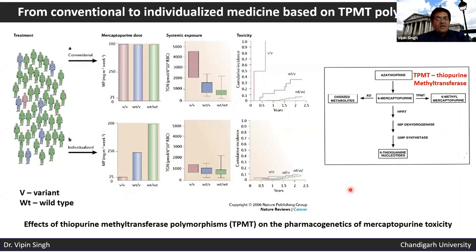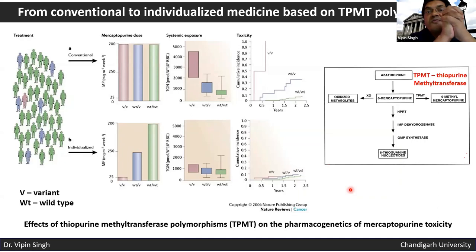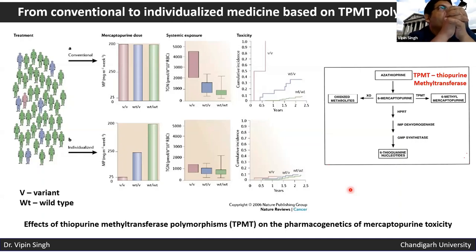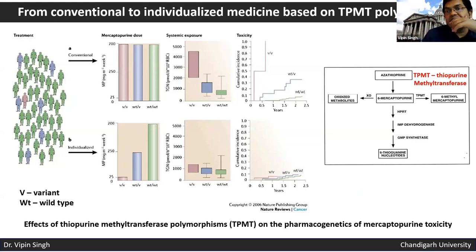This example clearly indicates that dosage variation based on individual genomic variation is important, and this is something we have not been doing until now. That is why some people say a medicine worked very well for them, while others say it caused a reaction — because we are all different, and medicine interacts with the genome differently depending on what variations you carry.